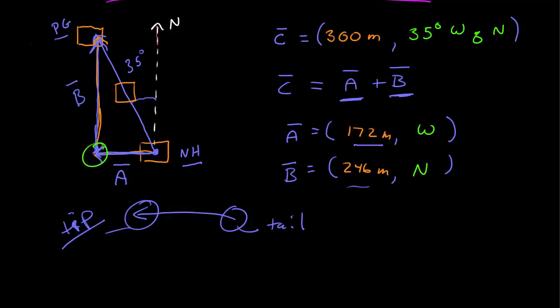Then to find the result of those two vectors, you put the tail of the resulting vector on the tail of the first vector and then you draw the line to the tip of the second vector. So that's the tail-to-tip method.